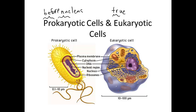If we look at these two pictures, we can see some of the similarities and differences. Both types have a plasma membrane, both types have a cytoplasm, and both have DNA. The main difference is that in a prokaryotic cell, the DNA is found free in the cytoplasm. It is in a region though, and they call that the nucleoid region, or nucleus-like region. But it's not a true membrane-bound nucleus like we have in eukaryotic cells.